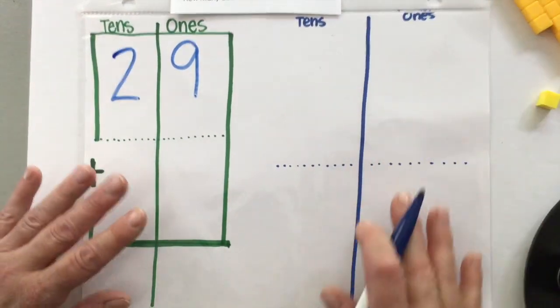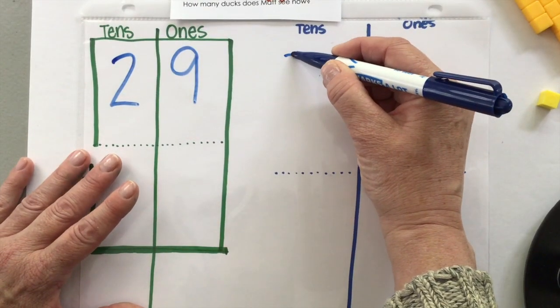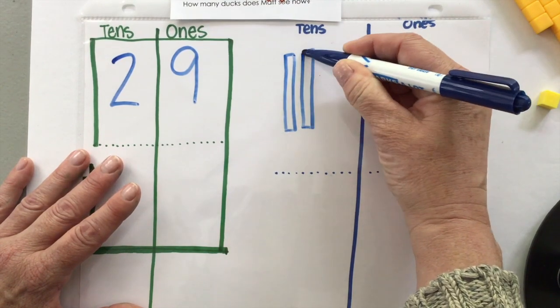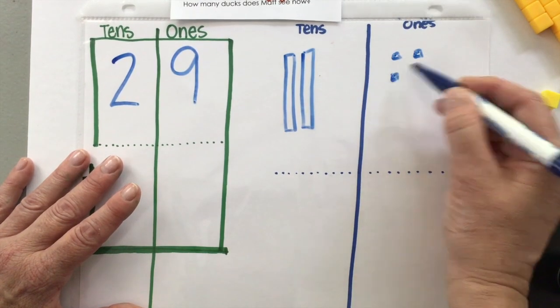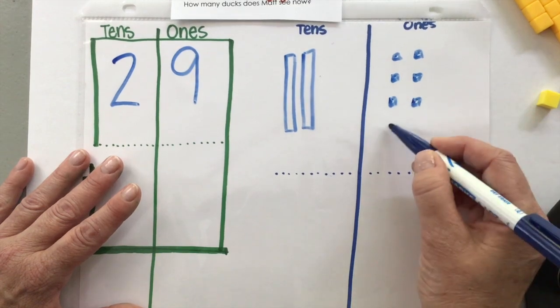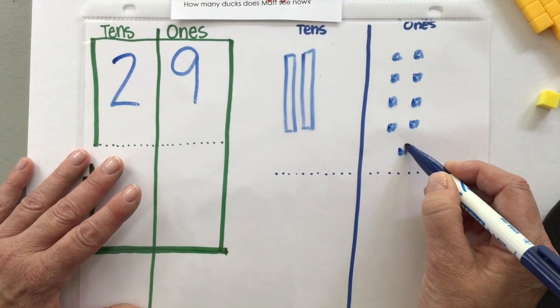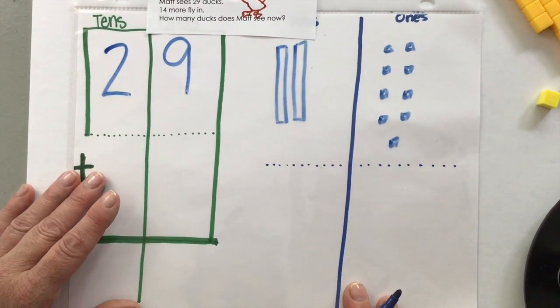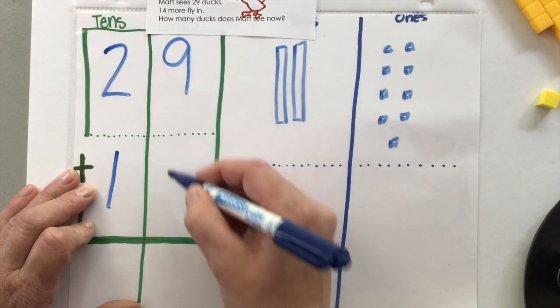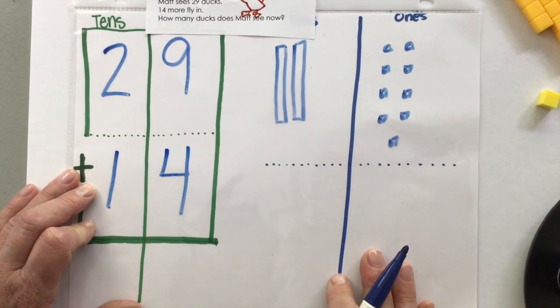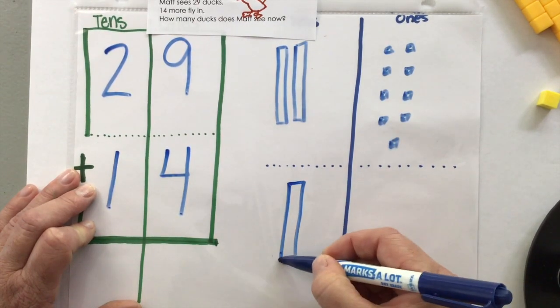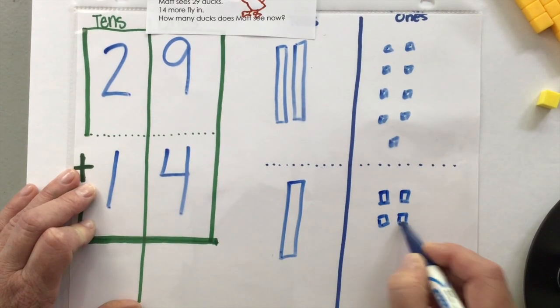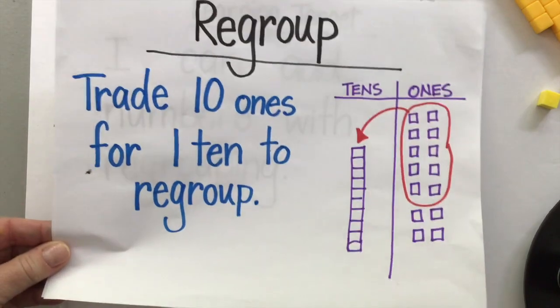So build it. If you don't have your base 10 blocks, just represent it. Two sets of 10 and nine. One, two, three, four, five, six, seven, eight, nine. 14 more fly in. One set of 10 and four. One set of 10 and four.